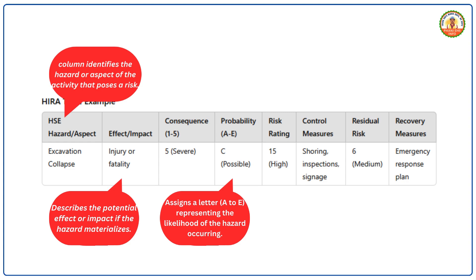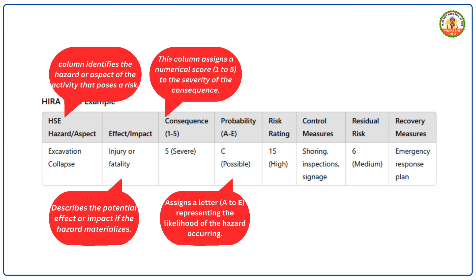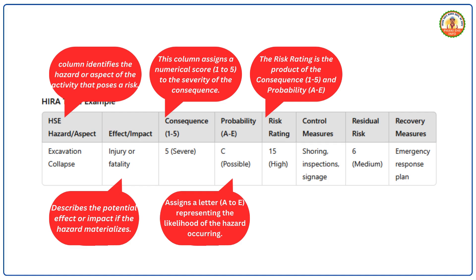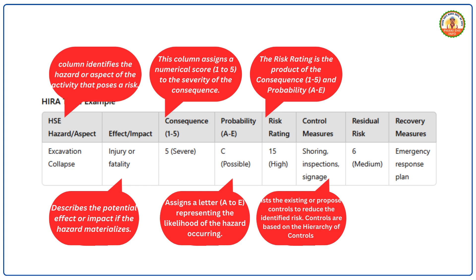Consequence (1–5): assigns a numerical score to the severity — for example, a wall collapse causing a fatality is scored as 5 (severe). Risk Rating: the product of the consequence (1–5) and probability (A–E) scores, indicating the overall level of risk — for example, consequence 5 × probability 3 = 15, which is high risk. High-risk activities require immediate mitigation measures before proceeding. Control Measures: lists the existing or proposed controls to reduce the identified risk, based on the hierarchy of controls — for example, shoring, daily inspections, and restricting access.